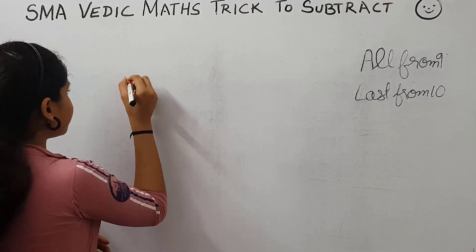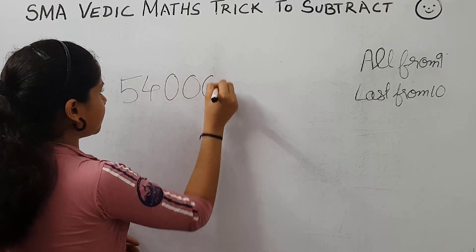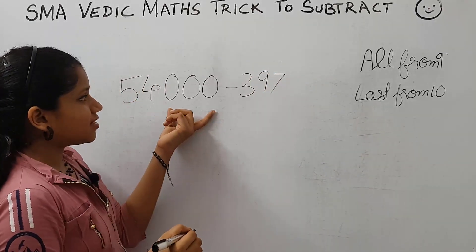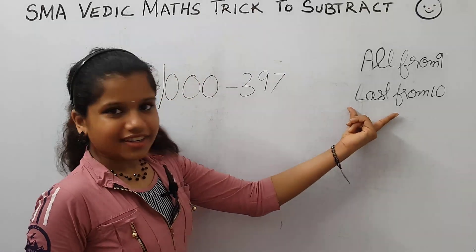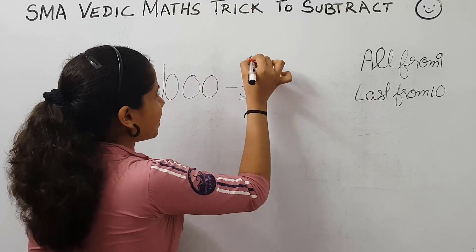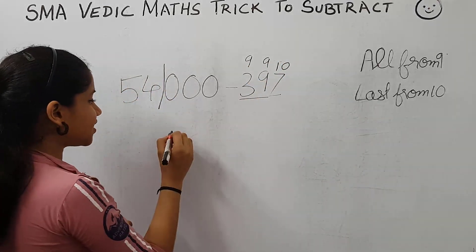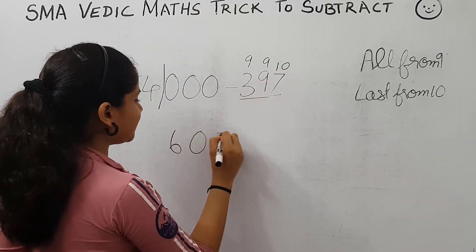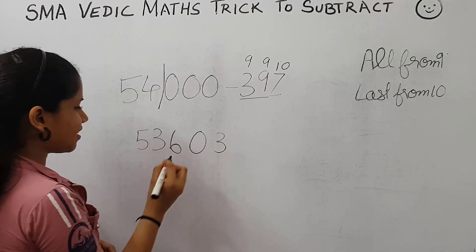Now let's take a bigger number: 54,000 minus 397. Here there are three zeros and three digits, so we put a slash here and apply the rule all from 9 and last from 10. 9 minus 3 is 6, 9 minus 9 is 0, 10 minus 7 is 3. Now 54 minus 1 is 53. The answer is 53,603.